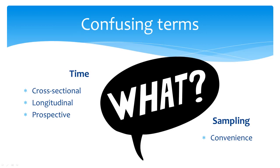Other confusing terms often relate to the way samples were collected, like convenience sampling. Convenience sampling means that the sample was readily available or accessible to the researchers. This term will give you a hint that the study does not have a random sample and therefore is not a randomized controlled trial, but you still need to classify it further as descriptive non-experimental or quasi-experimental.